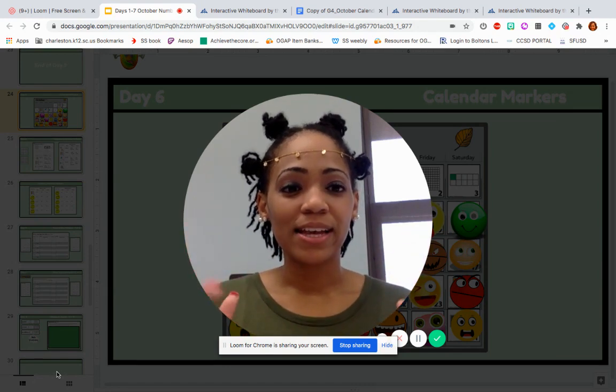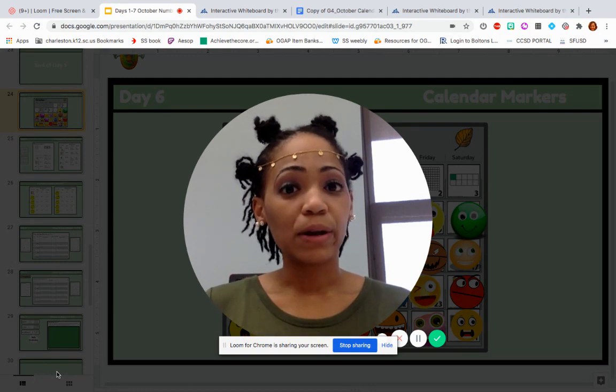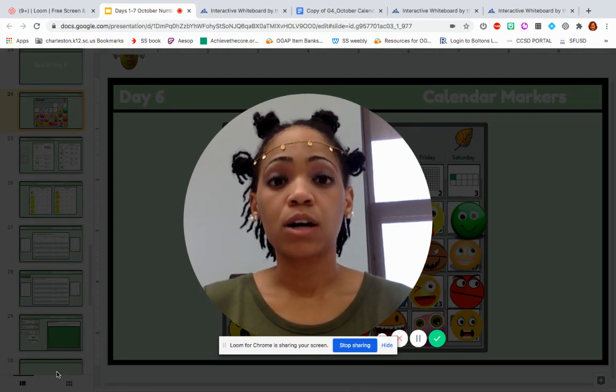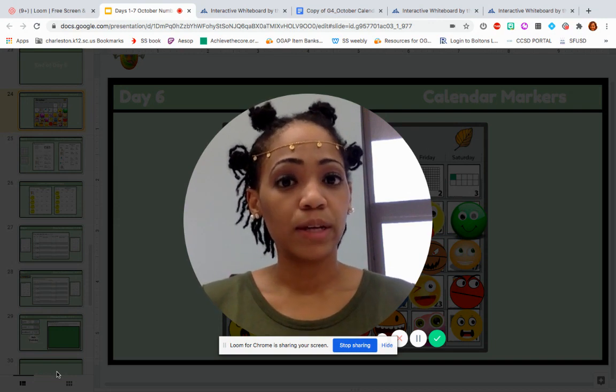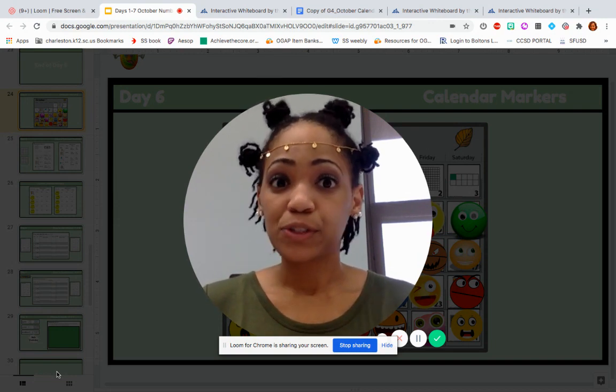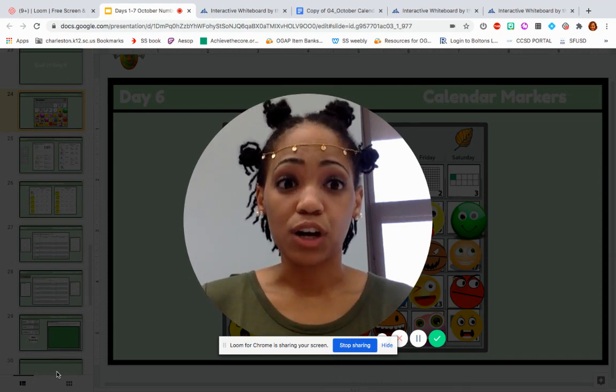Hey, fourth graders. Happy Thursday. Today is October 8th, and we are back for day six of our October number corner. On our agenda today, we are going to update our calendar grid. So we're going to see what today's marker looks like.